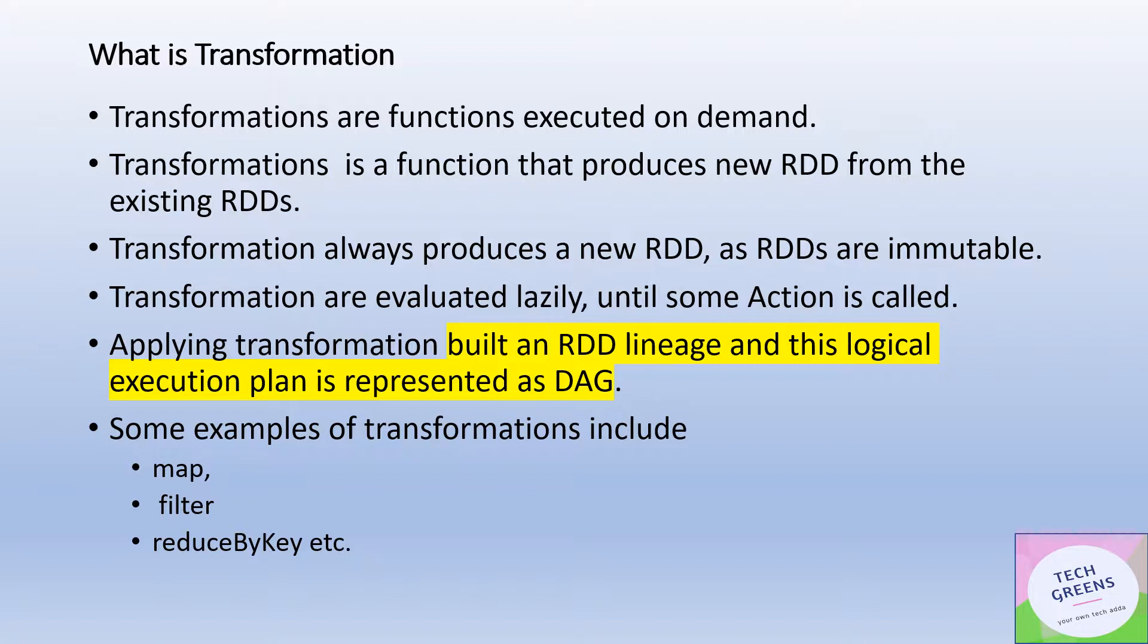All those transformations are stored as RDD lineages in the form of DAG, which is Directed Acyclic Graph. Some examples of transformations are map, filter, reduceByKey, and groupByKey functions.